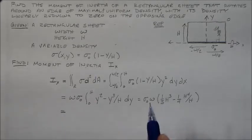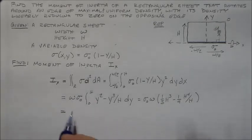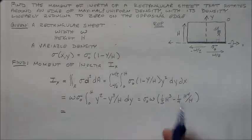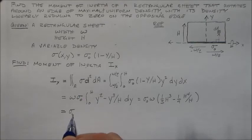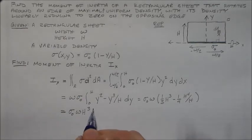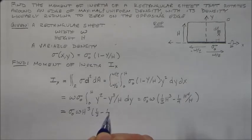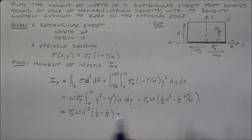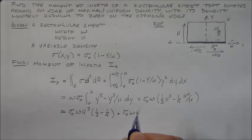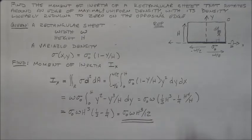What else would we like to do? Well, now we can start pulling these things together. So this h cubed thing comes out. So we have sigma naught w h cubed, and then we have one-third minus one-quarter. And you'll remember that one-third minus one-quarter is something fairly simple called one-twelfth. So we have sigma naught w h cubed over twelve. And that is the moment of inertia for that thing.